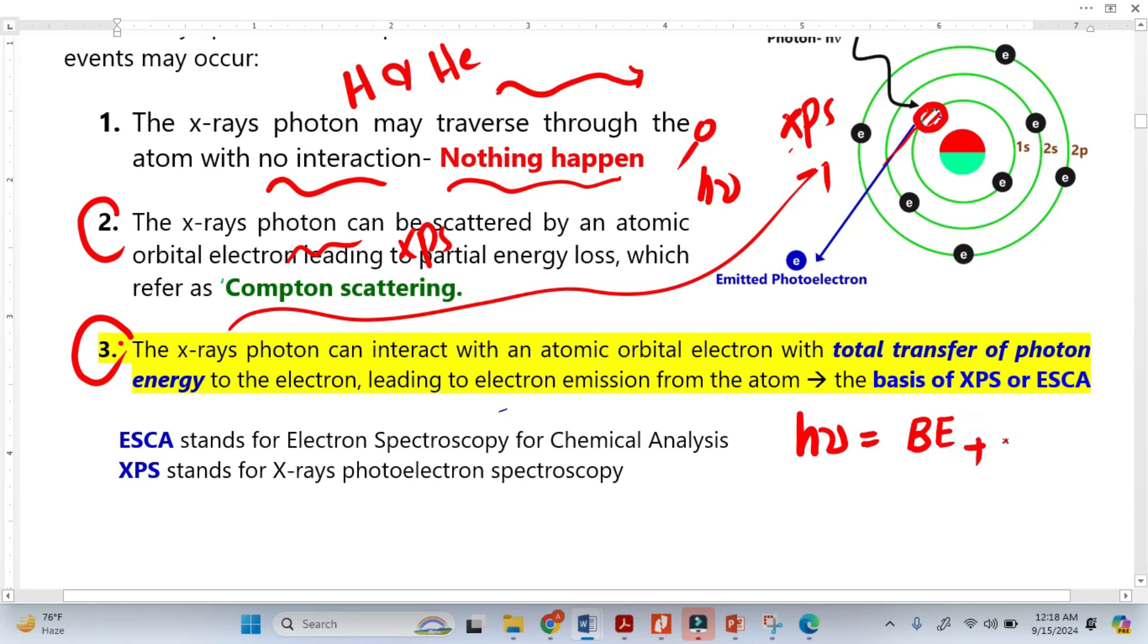plus the kinetic energy of that photoelectron. This is the famous equation: hν = BE + KE. In this case, the photon energy is completely converted into the electron, and this is the basis of XPS. Previously, it was called Electron Spectroscopy for Chemical Analysis (ESCA).